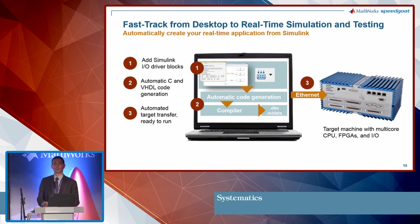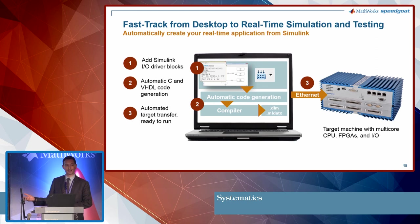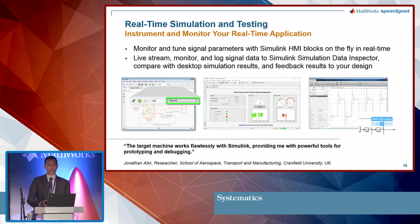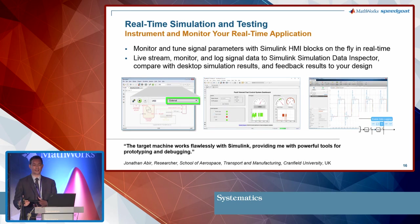The way to get from desktop to real-time simulation — basically model-based design with hardware connectivity — is to just add Simulink driver blocks to your model, then automatically generate C and/or VHDL code, and with a button click the real-time application is created and downloaded to your target machine. That takes one minute and you're ready to go. You can test your control design, prove it, rapidly iterate, and try new things — all from within Simulink in the so-called external mode. You can add sliders to tune motor velocity, log data, and use the Simulink Simulation Data Inspector to compare real-time results with desktop simulation results to improve your model.